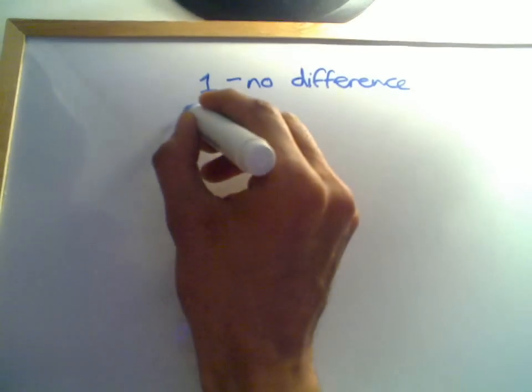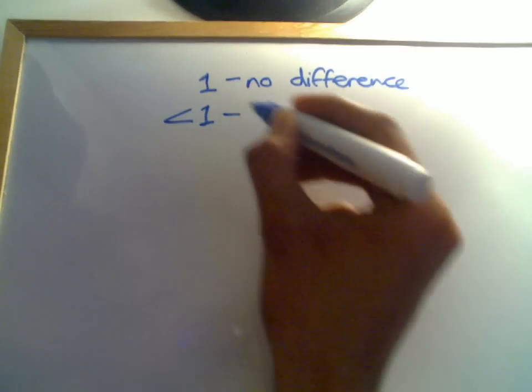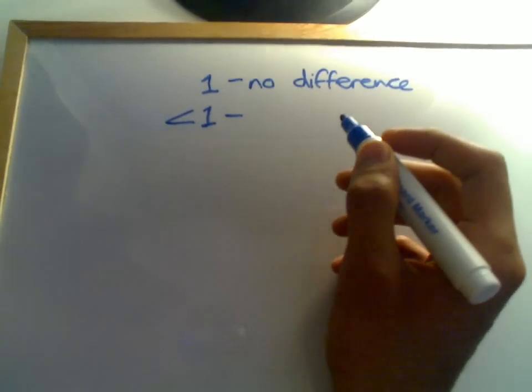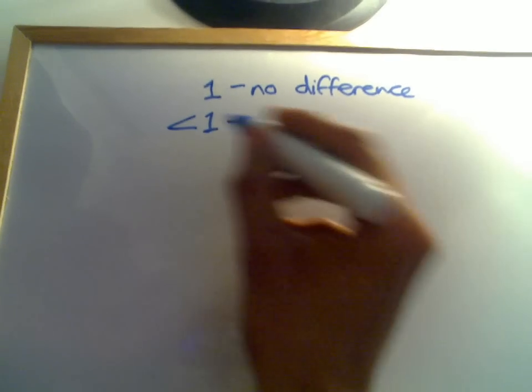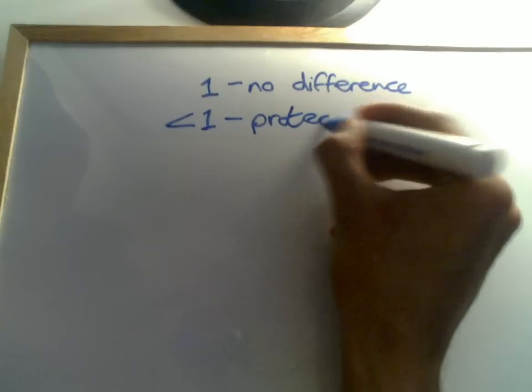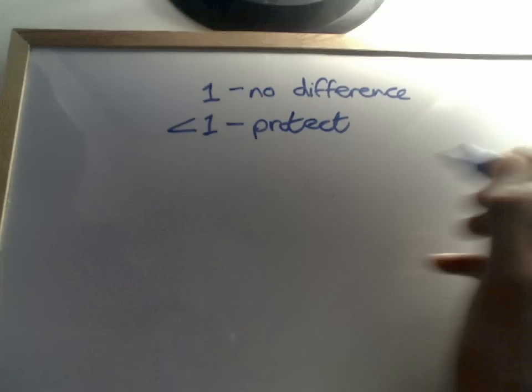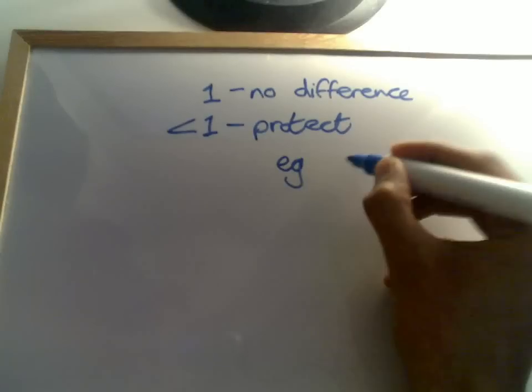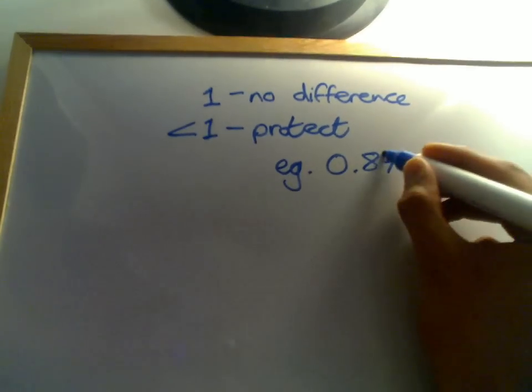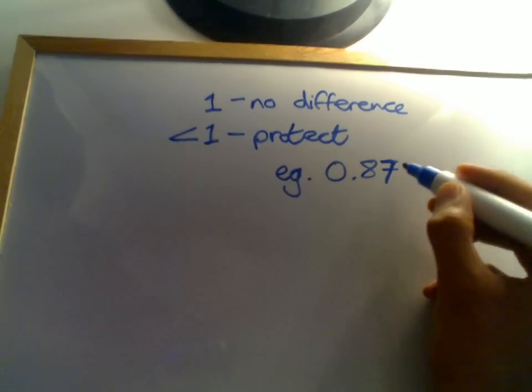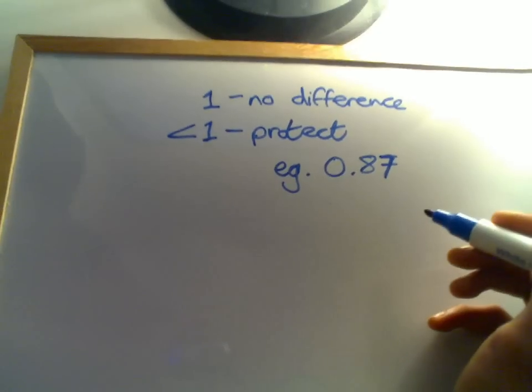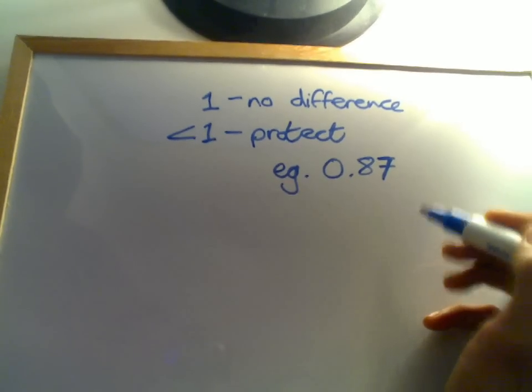If we have a relative risk that's less than one, and in my previous example you saw we had a relative risk less than one, I think it was 0.87, then that would mean it's having a protective effect. If our relative risk is less than one, let's say for example I think it was 0.7 in the last example, that would mean that out of every 100 people, 13 less have died.